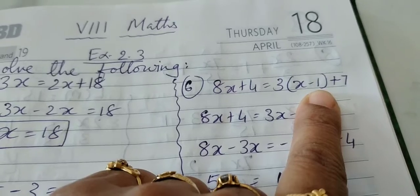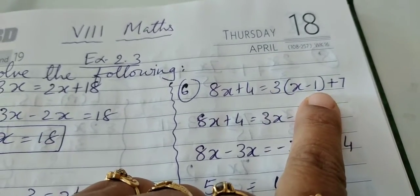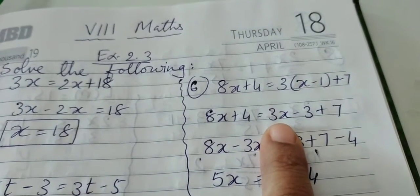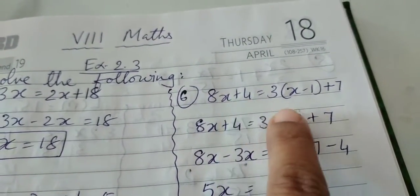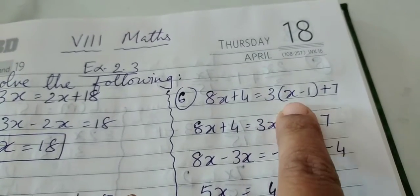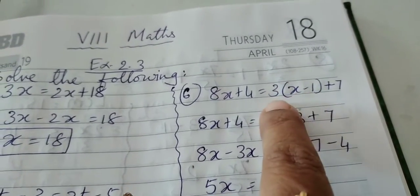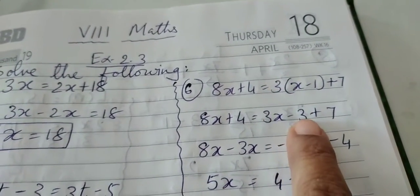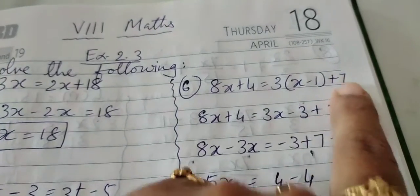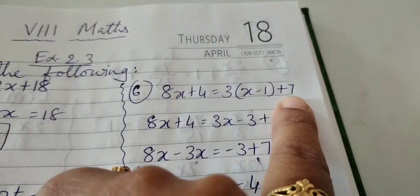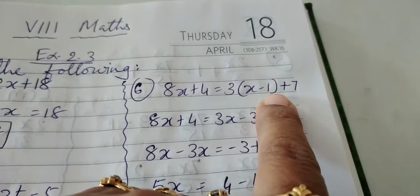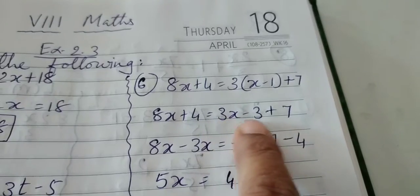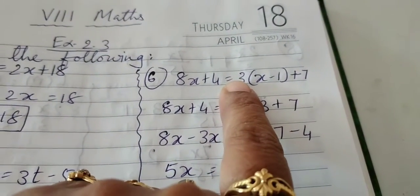So in this case we have to first open up the bracket. We have to solve this part of the equation. Now we move on to the next step. 8x plus 4 is equal to 3 is multiplied to the bracket, so all the terms inside the bracket will be multiplied with 3. x into 3 is 3x, minus 1 into 3 gives you minus 3 plus 7. 3 is not multiplied with 7 because the bracket gets completed over here, closed over here after minus 1. So only x and minus 1 is multiplied with 3.